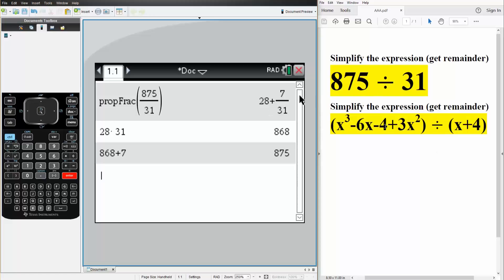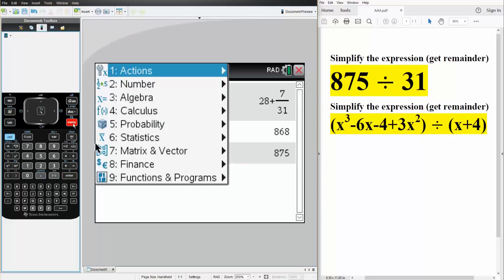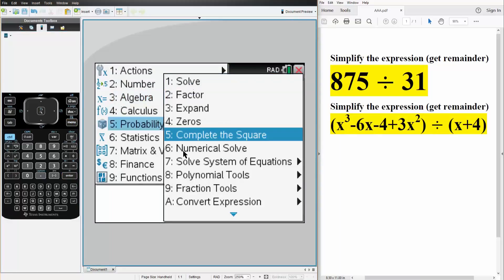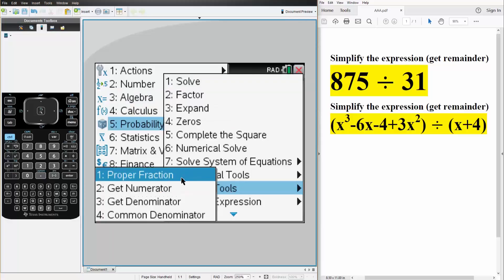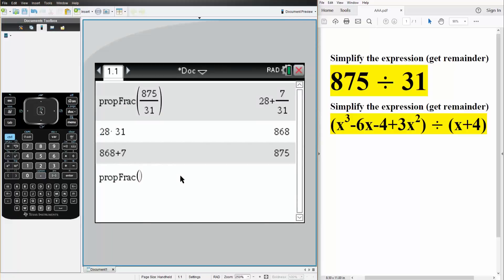And now we'll divide this polynomial by x plus 4 using the same method. So we hit menu, we hit algebra, we hit fraction tools, and we hit proper fraction. So we have x cubed minus 6 times x minus 4 plus 3 times x squared. And this is all going to be divided by x plus 4.